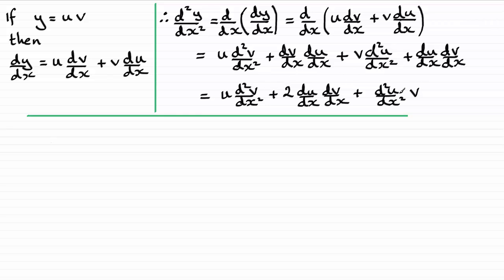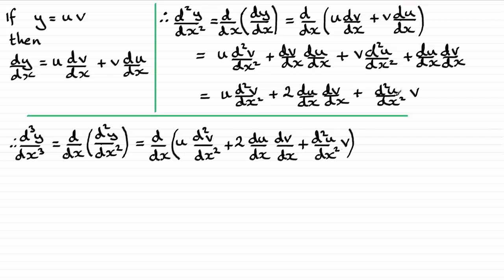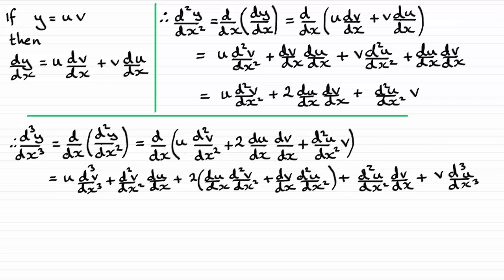So what happens if we look to find d³y/dx³? We need to differentiate d²y/dx² with respect to x, and we've just seen that result. So we're going to need to differentiate all of that with respect to x, looking at each term individually. It's quite a lot of work — we need to use the product rule on each one. To save time, I've written the result out.